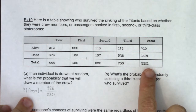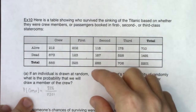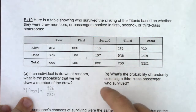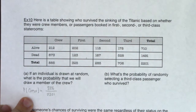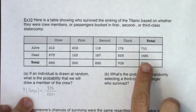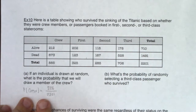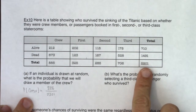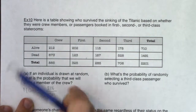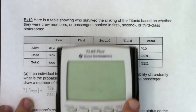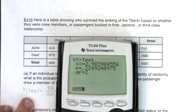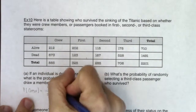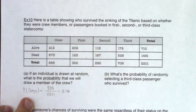With most of our probabilities on table problems in chapter three, the denominator is the number in the bottom right-hand corner. The exception is conditional probabilities, where we had formula number two — a probability in the numerator and denominator, and some denominators canceled out. For the most part, any probability from a table uses that grand total denominator. So 885 divided by 2,201 gives us about a 40% chance of drawing a crew member.